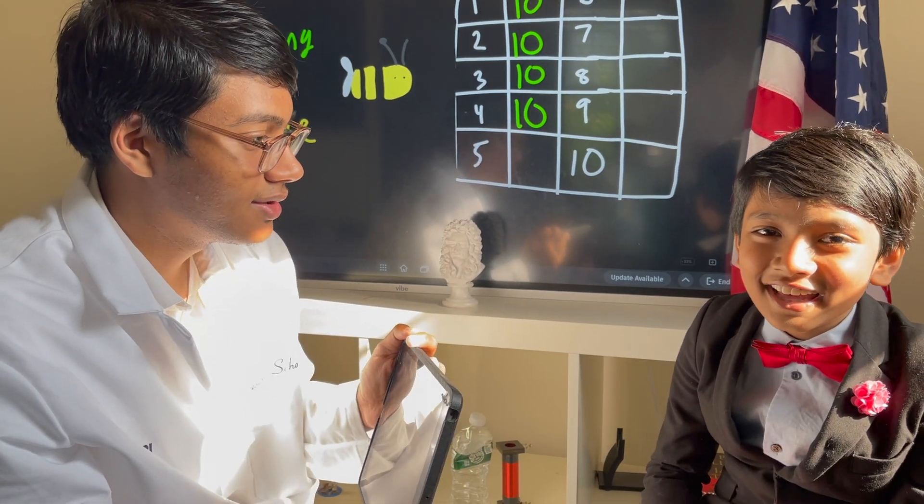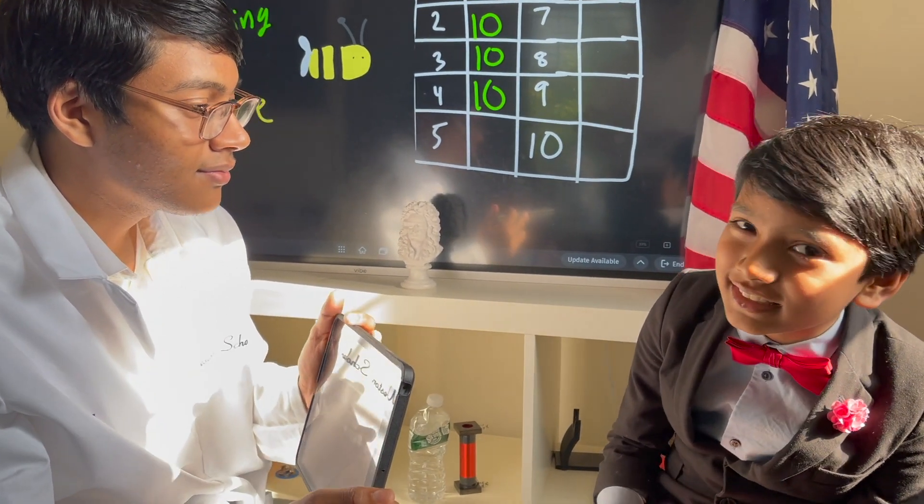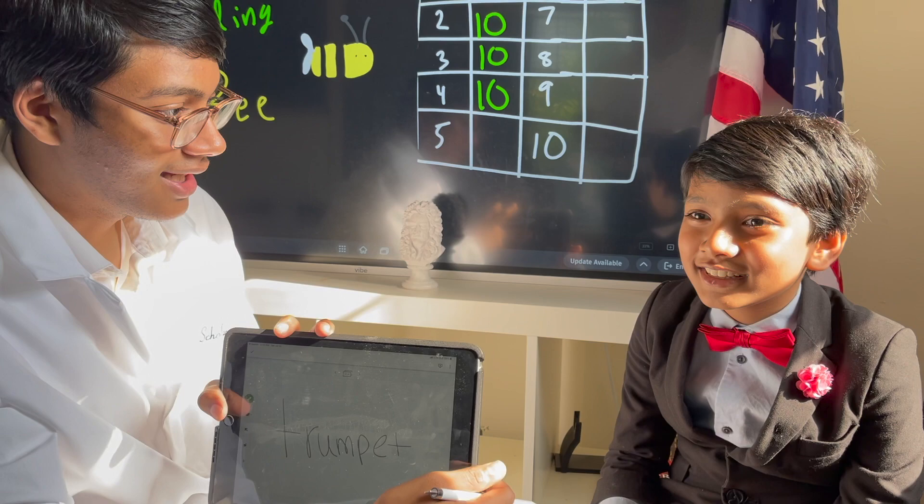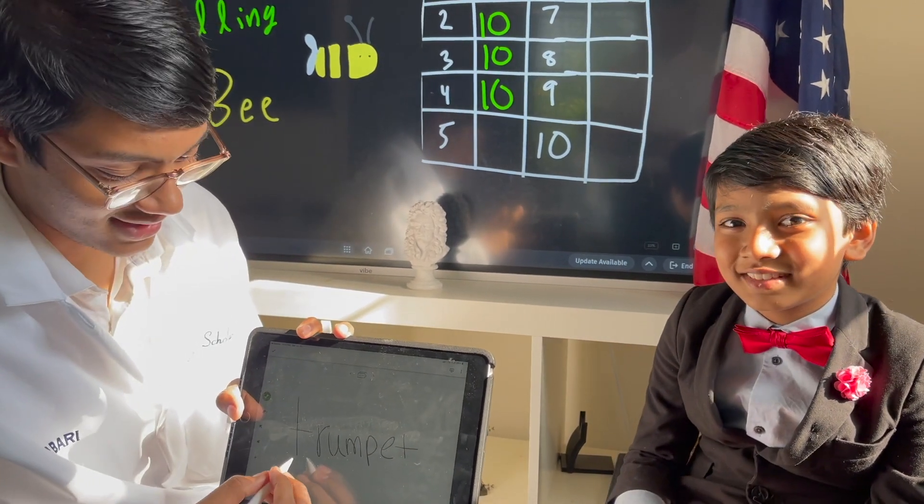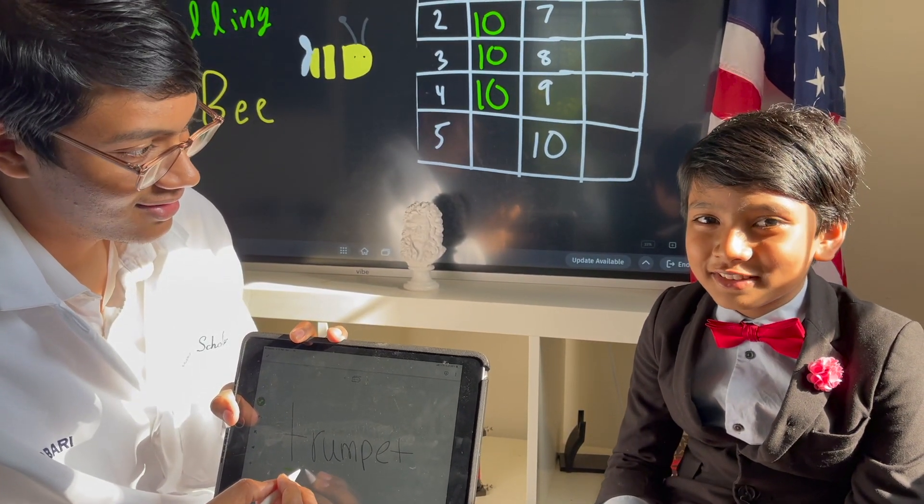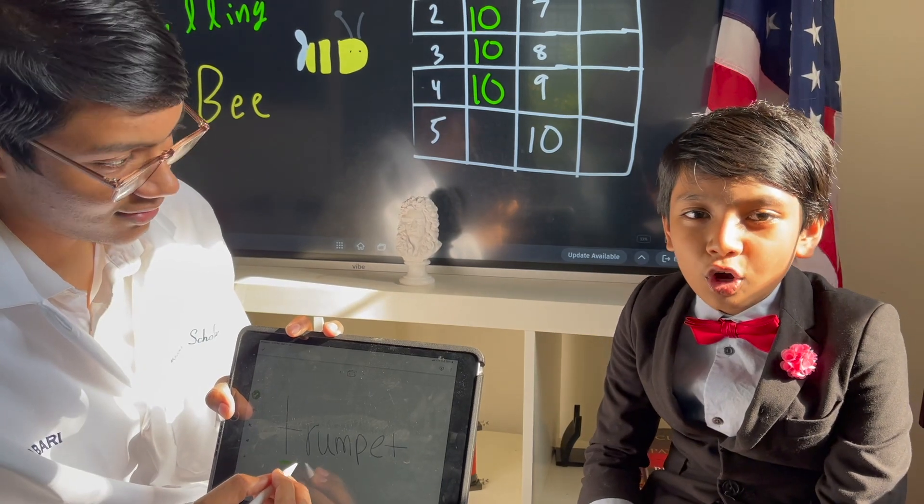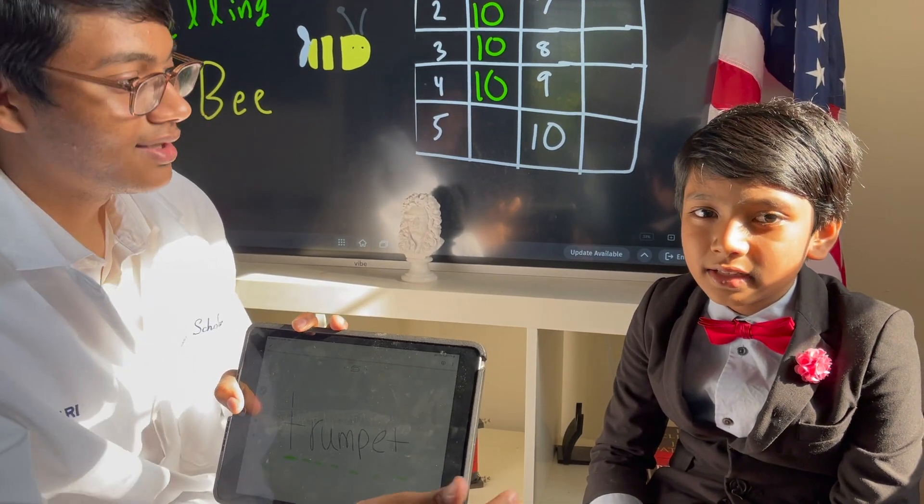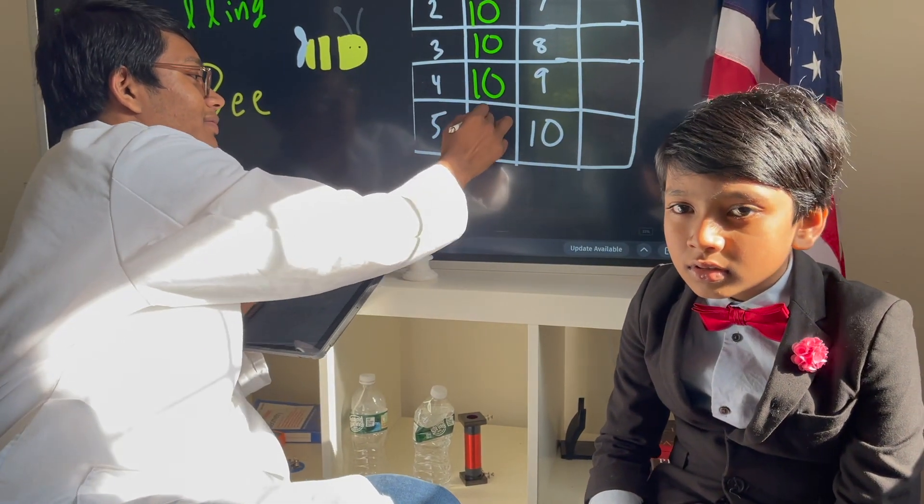Are you ready for the next word? Yeah. This seems kind of hard actually. This is level three right? I hope so. Trumpet. That's easy. I don't think this is level three anymore. T-R-U-M-P-E-T. That's right. Okay. 10 points.